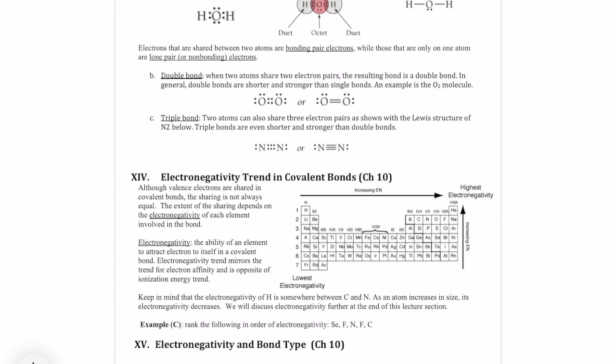Hi everyone, we're going to continue our discussion about Lewis structures and drawing Lewis structures for covalent molecules by discussing a concept known as electronegativity.